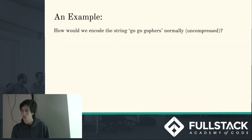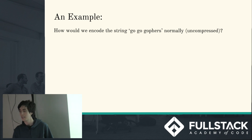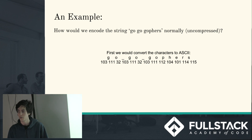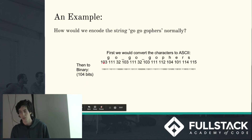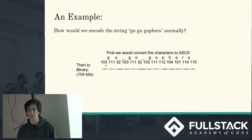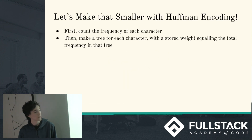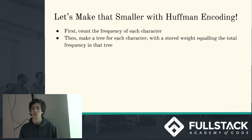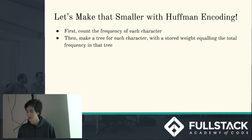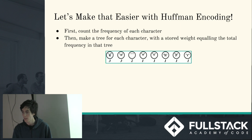We're going to jump right into an example. Take the string "go, go, go first" and encode it. First let's look at what it would look like without compression — we'd convert each character to ASCII, each ASCII character to binary. G is 103, then 103 in binary. Do that for every character and you have 104 bits. But we can make that a lot smaller with Huffman encoding. First we count the frequency of every character, then we make a tree for every character where each character is the head of a tree with the frequency of every character inside it. For "go, go, go first", we count up the frequencies and make their trees.